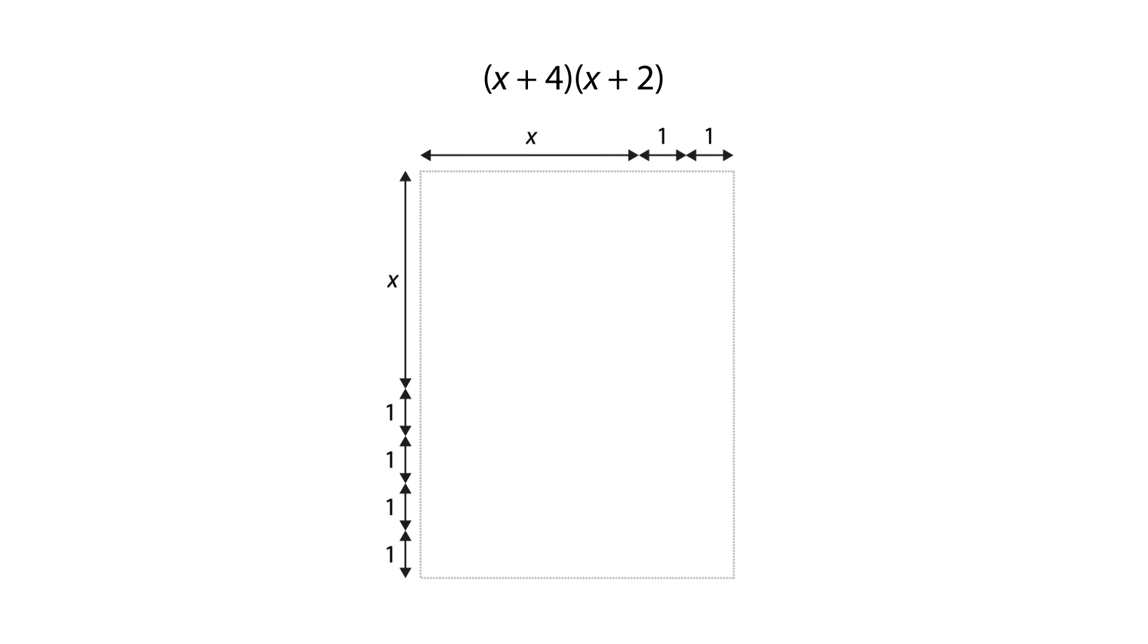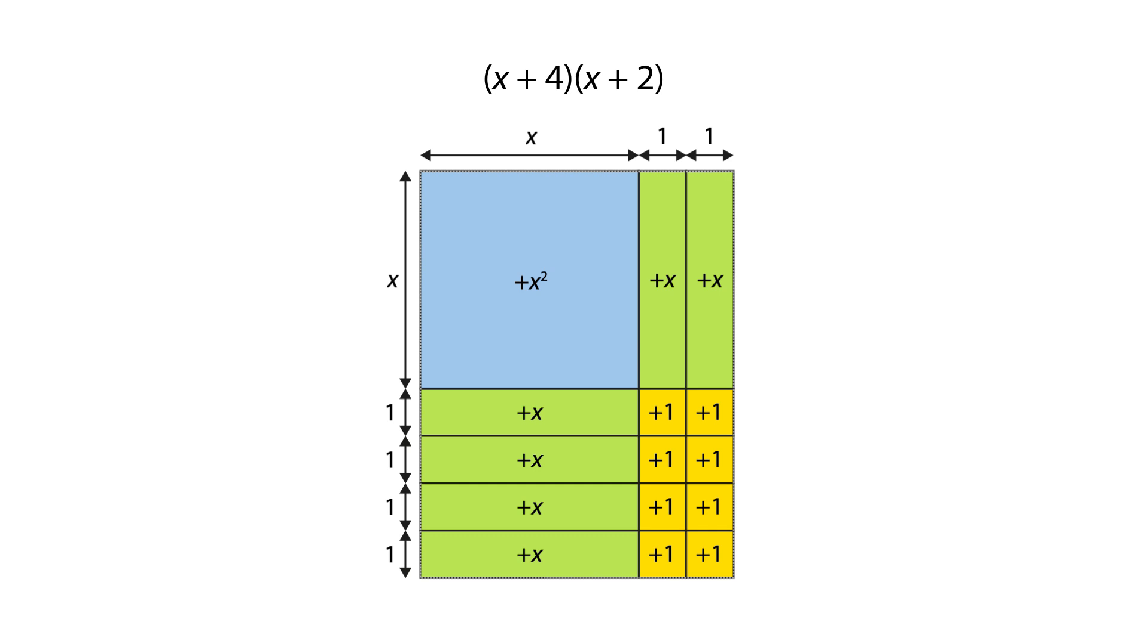Sometimes the x tiles are placed vertically in the completed rectangle and sometimes they are placed horizontally. Labelling the dimensions of the rectangle with the factors helps to determine the orientation of the tiles.